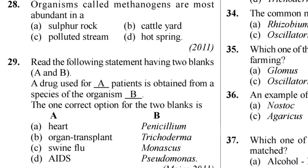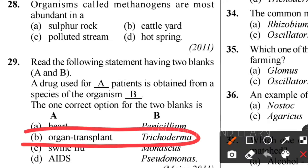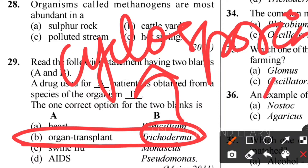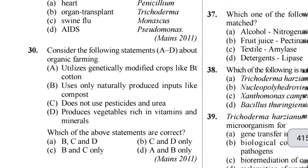Twenty-ninth question: a drug used for a patient is obtained from a species of organism - two blanks A and B. The drug used for organ transplantation is cyclosporine A, and it is obtained from Trichoderma. Trichoderma produces cyclosporine A, which is an immunosuppressive agent. In organ transplant patients, if the body is going to reject the transplanted organ, cyclosporine A suppresses the immune system for some days. Option B is the correct answer.